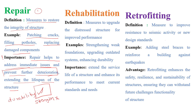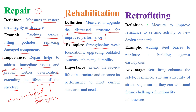Next is rehabilitation. The definition is: measures to upgrade the distressed structure for improved performance. If any structure is distressed and you want to improve its performance, you can do rehabilitation. A simple example is strengthening a weak foundation. If the foundation is weak and you strengthen it, we call it rehabilitation. Upgrading the outdated system and enhancing durability — here you can improve strength also, meaning both durability and strength are increasing.